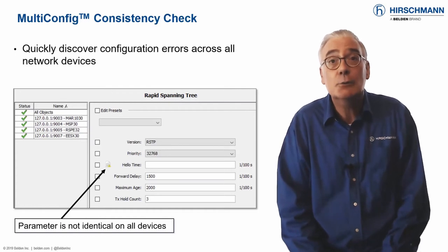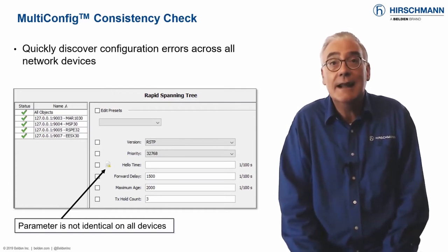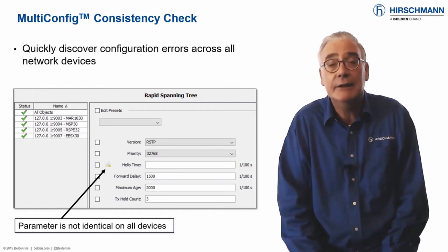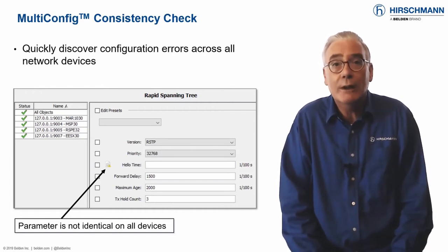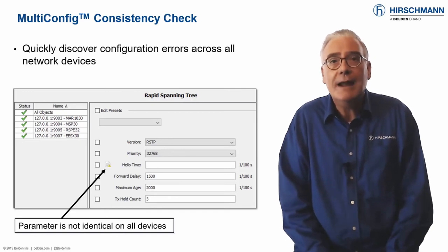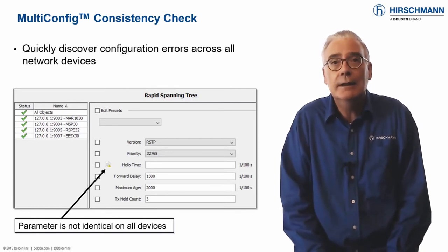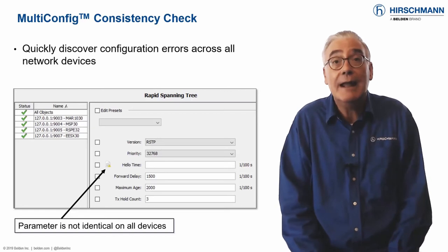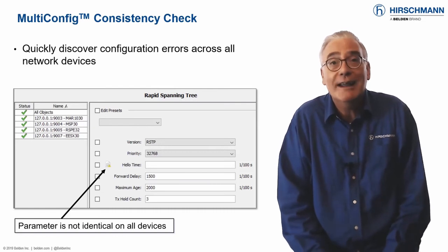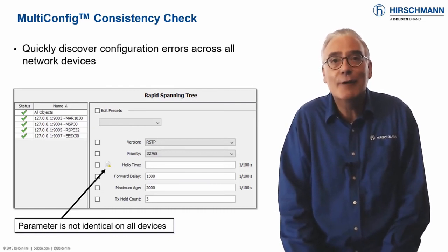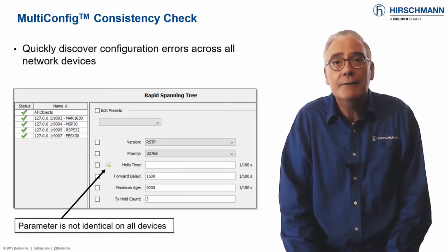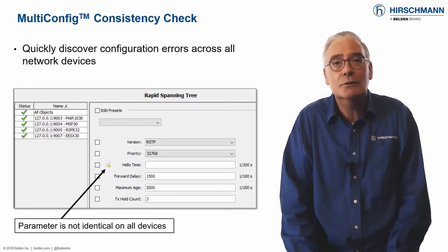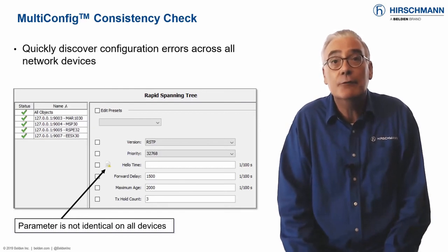First, select the switches that you want to check. Then select the relevant function from the multi-config menu. The parameters for this function will be displayed. If the value of a parameter across all devices is identical, it's displayed. If the value is not identical, a warning appears next to the parameter. To read the parameter per individual device, just select the relevant IP address. You will find the rogue value in no time at all. This simple technique will save you valuable time when investigating a network anomaly.